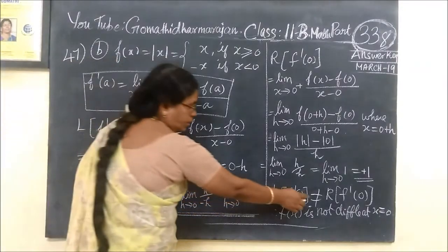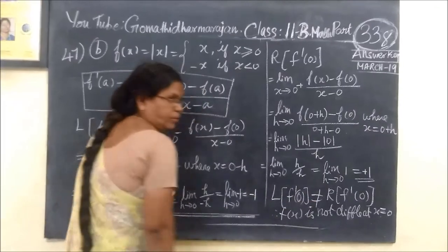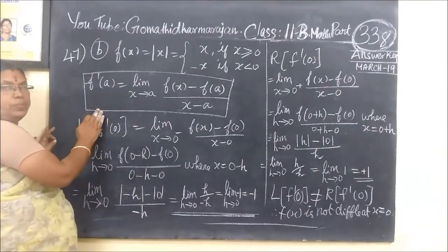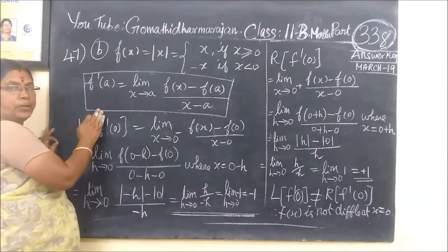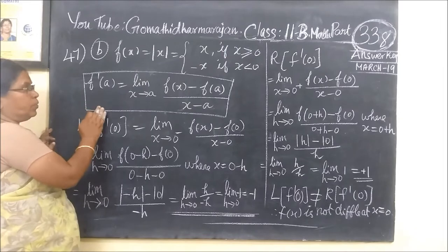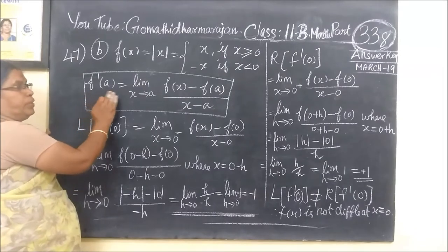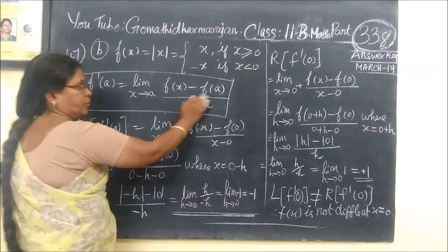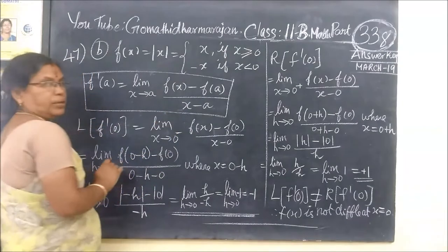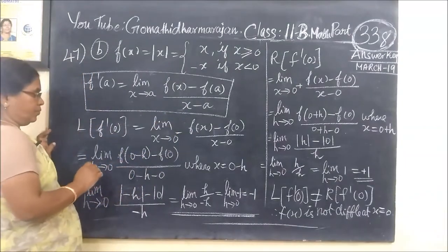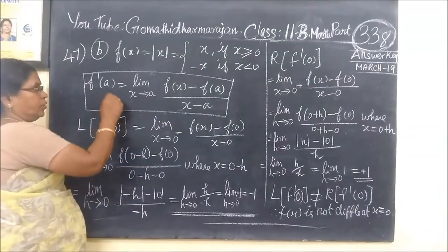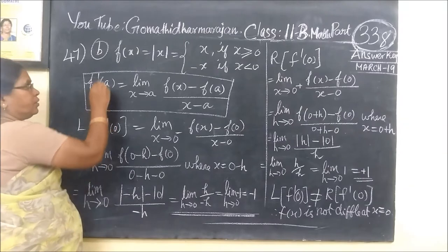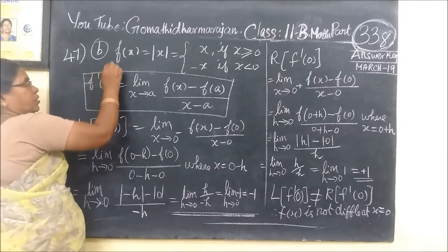Suppose this is differentiable. So, this is one of the basic formulas — the first principle: f dash of a equals limit x tends to a of f of x minus f of a, divided by x minus a. Let us define f at 0 for x equal to 0.